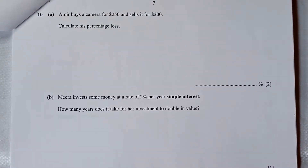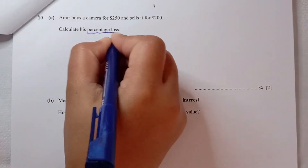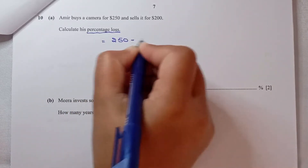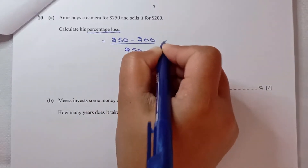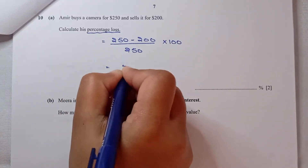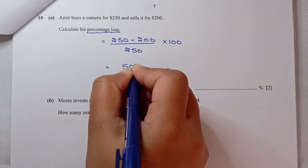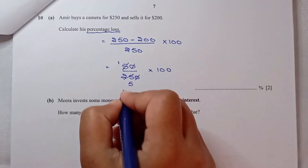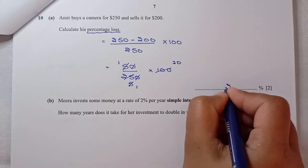Question number 10, part A: Aamir buys a camera for $250 and sells it for $200. The percentage loss is (250 minus 200) over 250 times 100, which equals 50 over 250 times 100. Simplifying: 5 times 100 divided by 25 equals 20% loss.